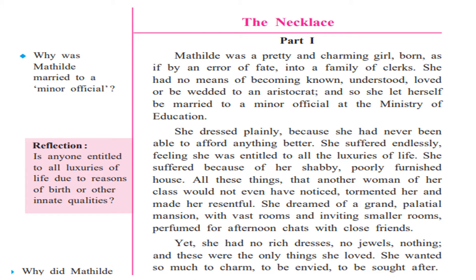She had no means of becoming known, understood, loved, or being wedded to an aristocrat, and so she let herself be married to a minor official at the Ministry of Education. Since marriages happen within the same classes, she got married to a minor official. She dressed plainly because she had never been able to afford anything better. She suffered endlessly, feeling she was entitled to all the luxuries of life.